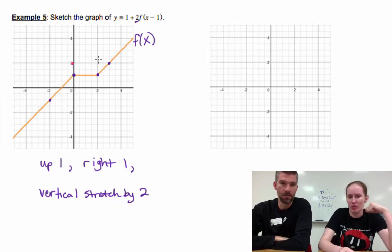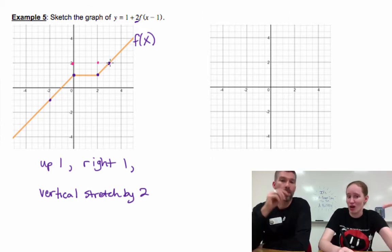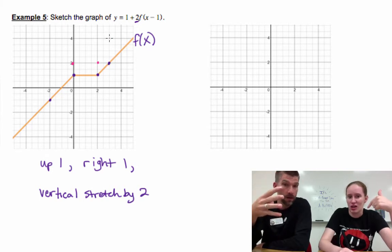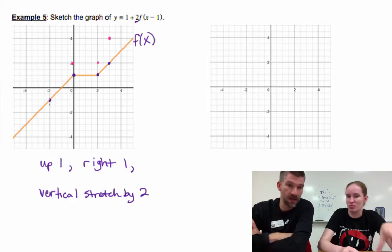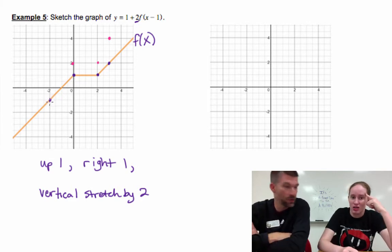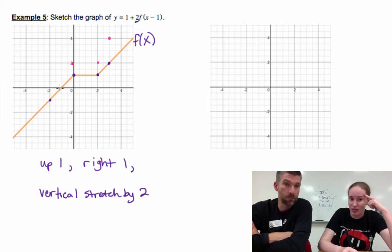Whenever we do this point which is three comma two, we multiply that y value by two, that's four. Well, let's just do four. I'm just looking at the vertical stretch. At zero zero that point doesn't move. But here at negative two negative one, we multiply our y value by two and get down here.